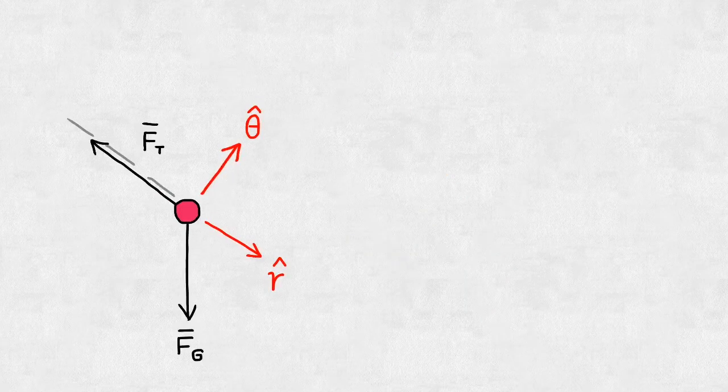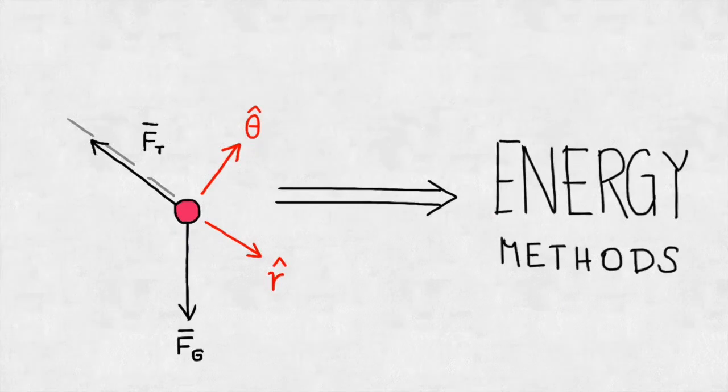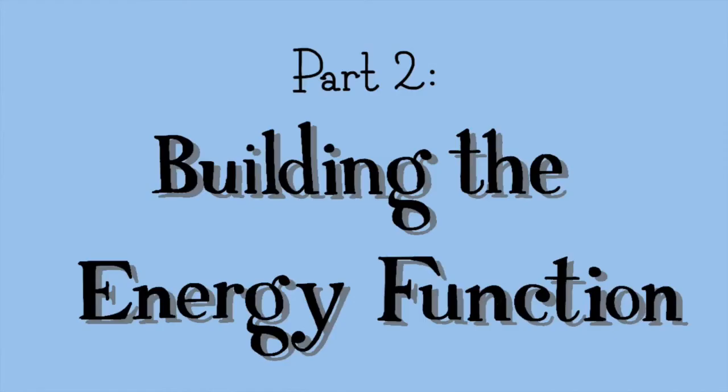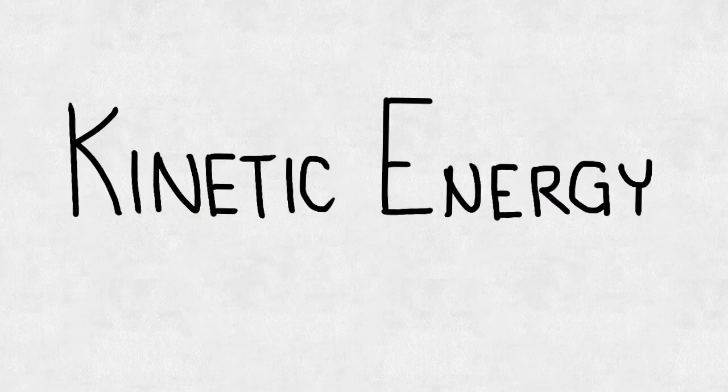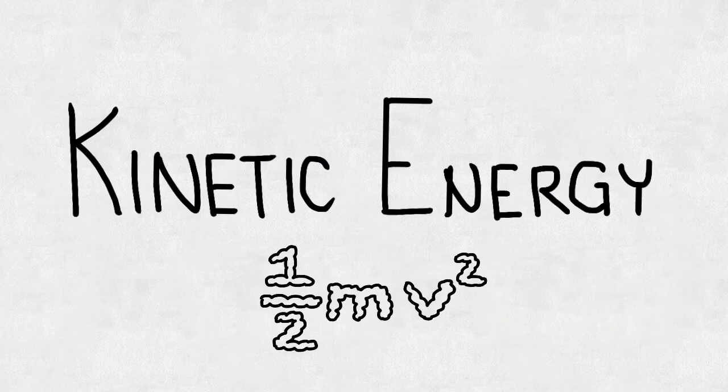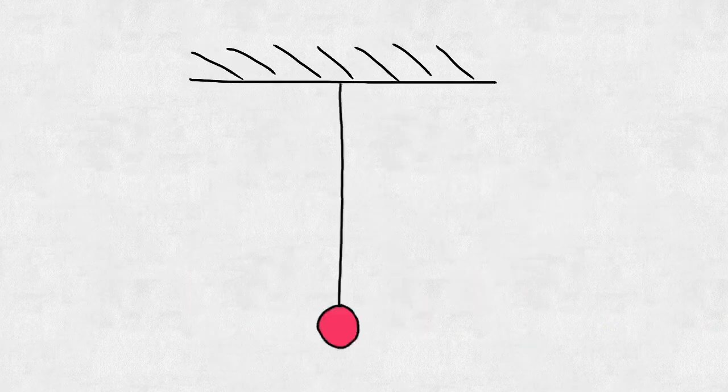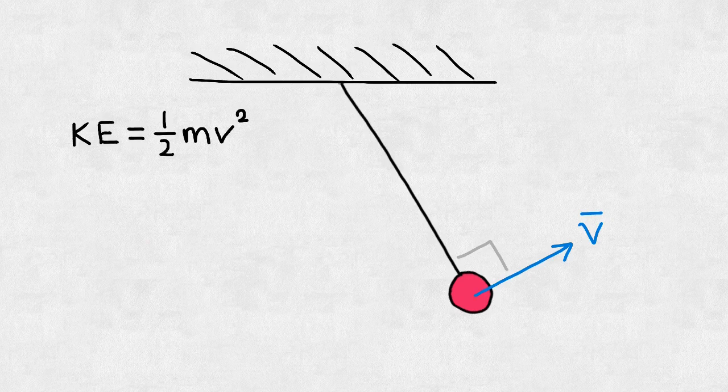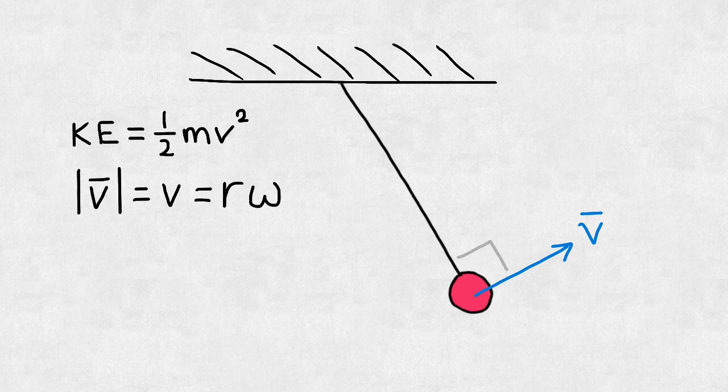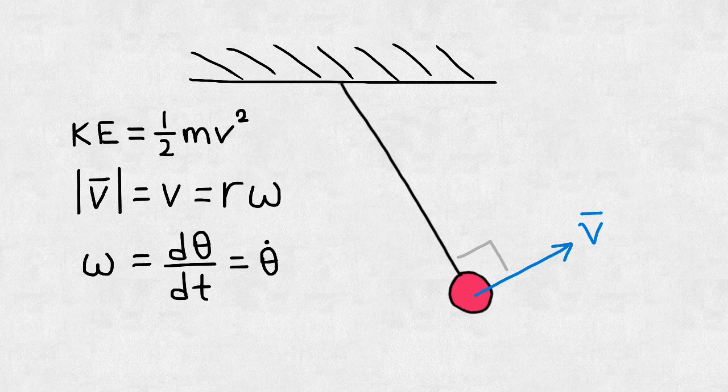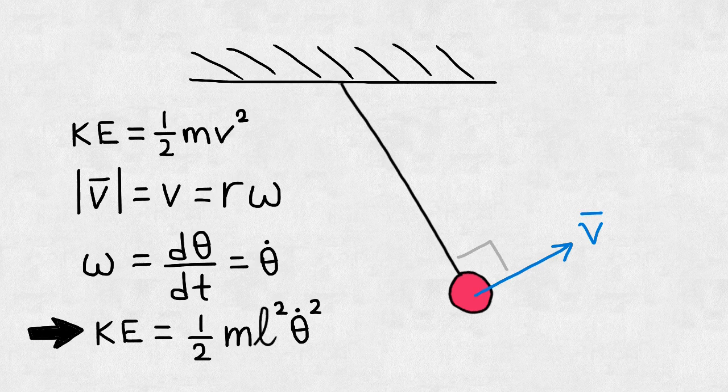This time, we'll bypass the traditional free body diagrams in favor of energy methods and see where that leads. We can find the kinetic energy of the pendulum using the iconic formula 1/2 mv squared. To find the tangential velocity v of the pendulum, remember that it's just the angular velocity times the radius of rotation. Angular velocity is how fast the angle changes over time, so naturally it's just the derivative of theta, which we can denote theta dot. So the kinetic energy of the bob is just 1/2 ml² theta dot squared.